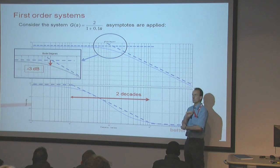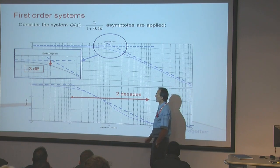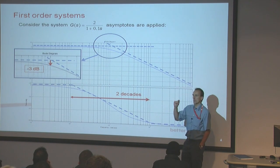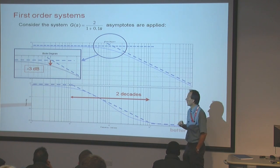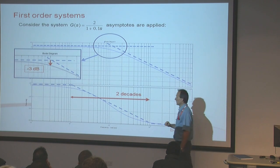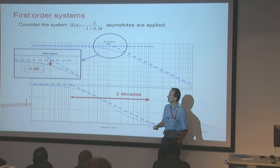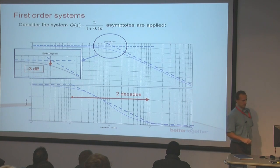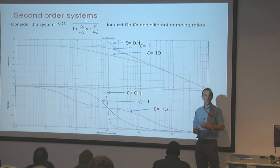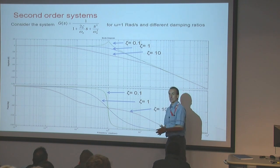At the corner of a first order Bode plot, the real data is 3 dB down from the asymptotes. That's always the case - the maximum error between the straight lines and the real data is minus 3 dB. The reason for going through this is to lead into what second order systems look like, because we've got more of a problem with second order systems when we apply the straight line approximations.